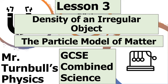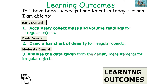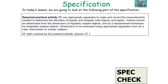If we're successful in today's lesson, we should be able to calculate the density of an irregular shaped object. We can accurately collect the mass and volume readings for irregular objects, understand what graph to draw for the density of irregular objects, and then analyse the data taken from the density measurements for irregular objects.